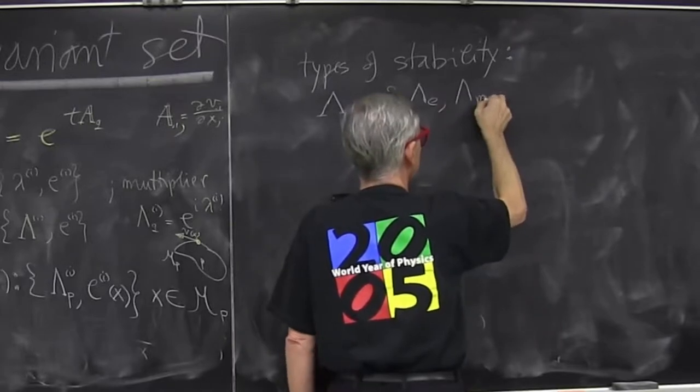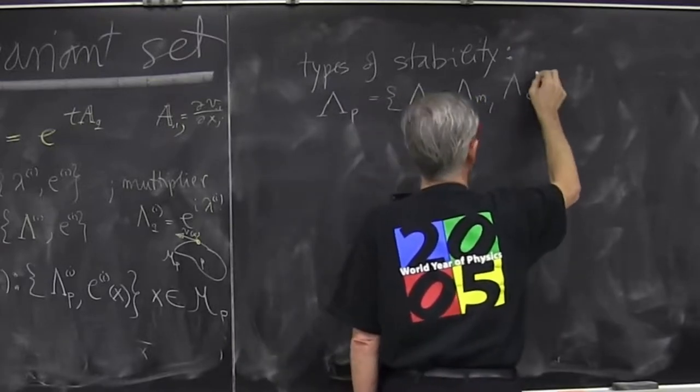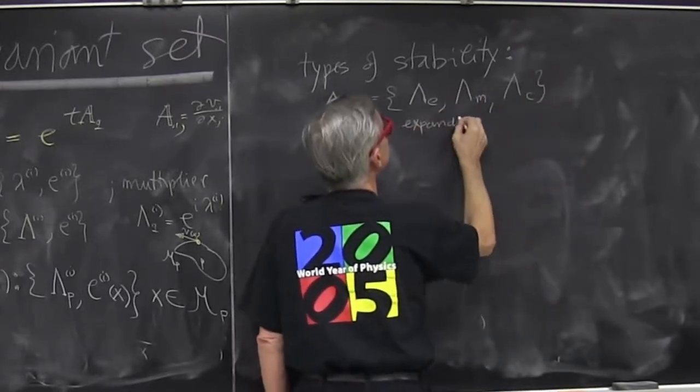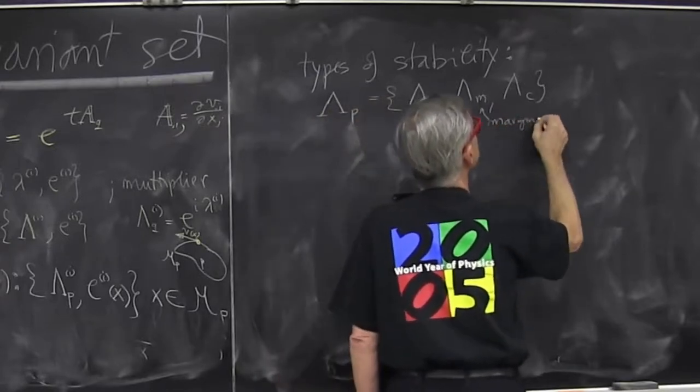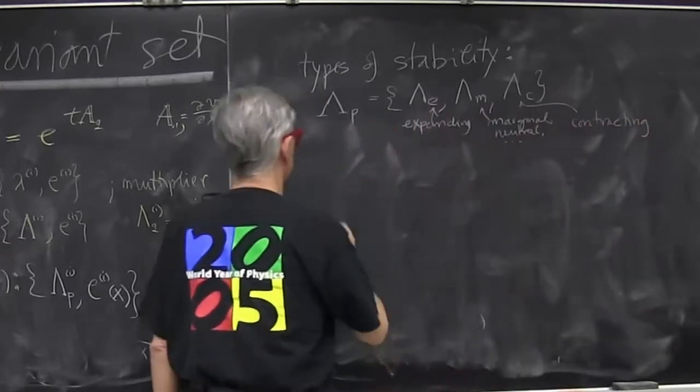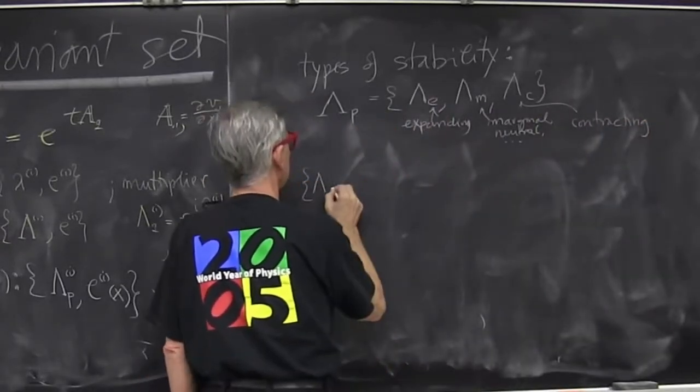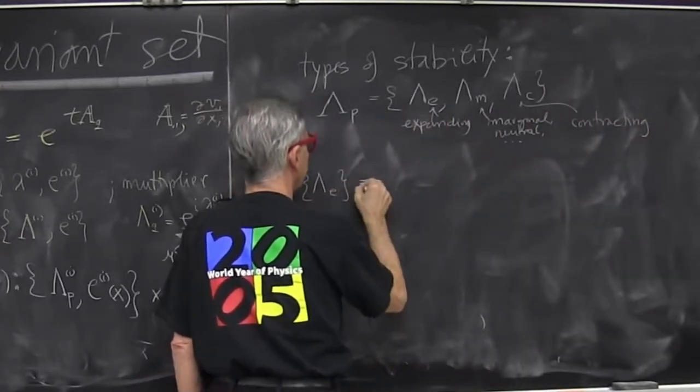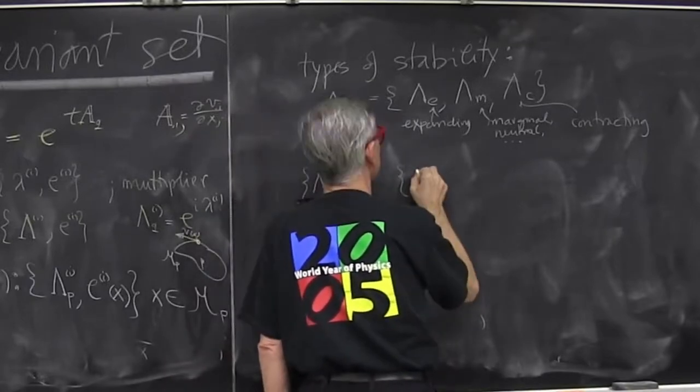Expanding, marginal, and contracting lambda expanding. These are all multipliers.